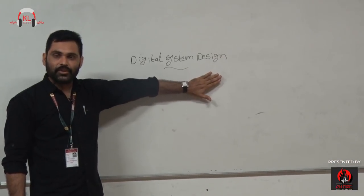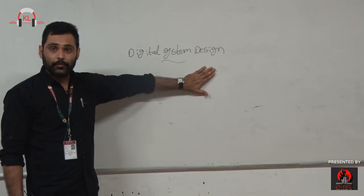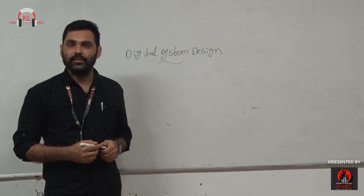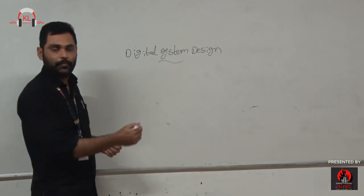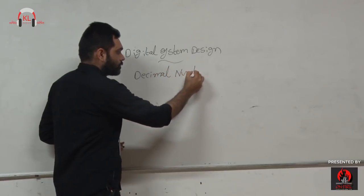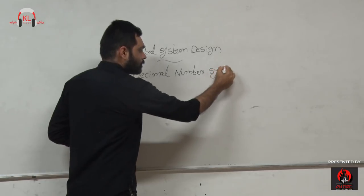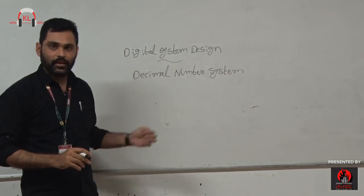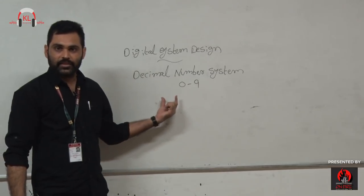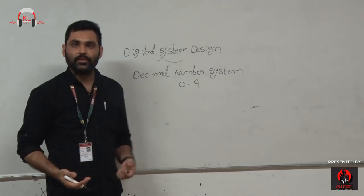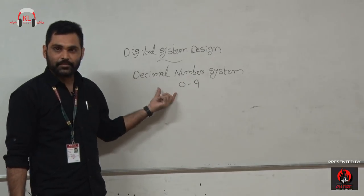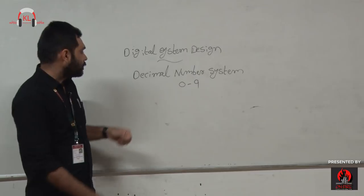To learn digital system design, first we should know what number systems we are going to use. Generally, all of us know we have been practicing the decimal number system for many years. This decimal number system consists of values from 0 to 9. Any number we want is a combination of these digits — for example, 25 is a combination of two individual digits. The first number system is decimal, and after that we have different number systems.